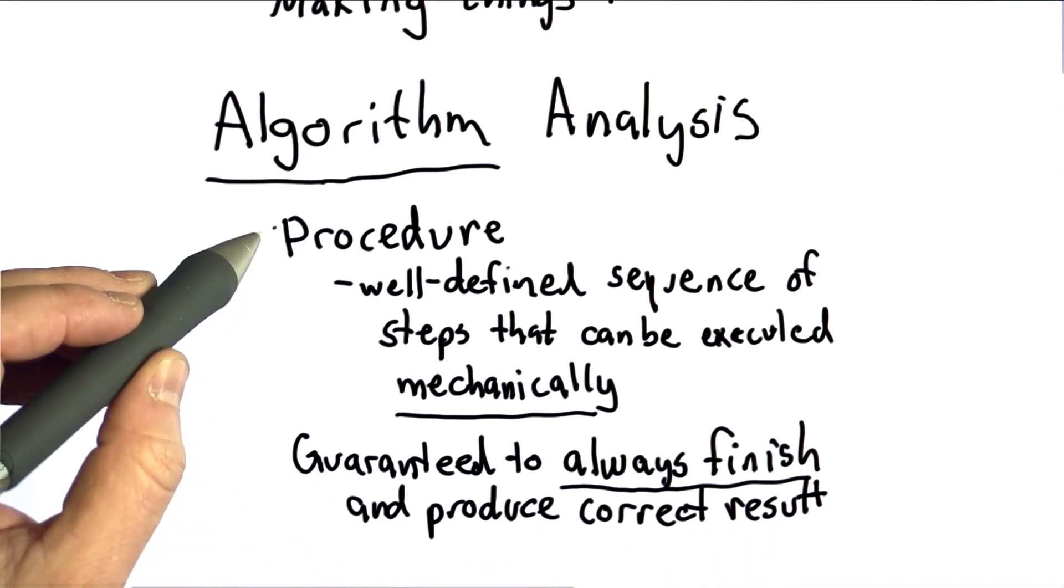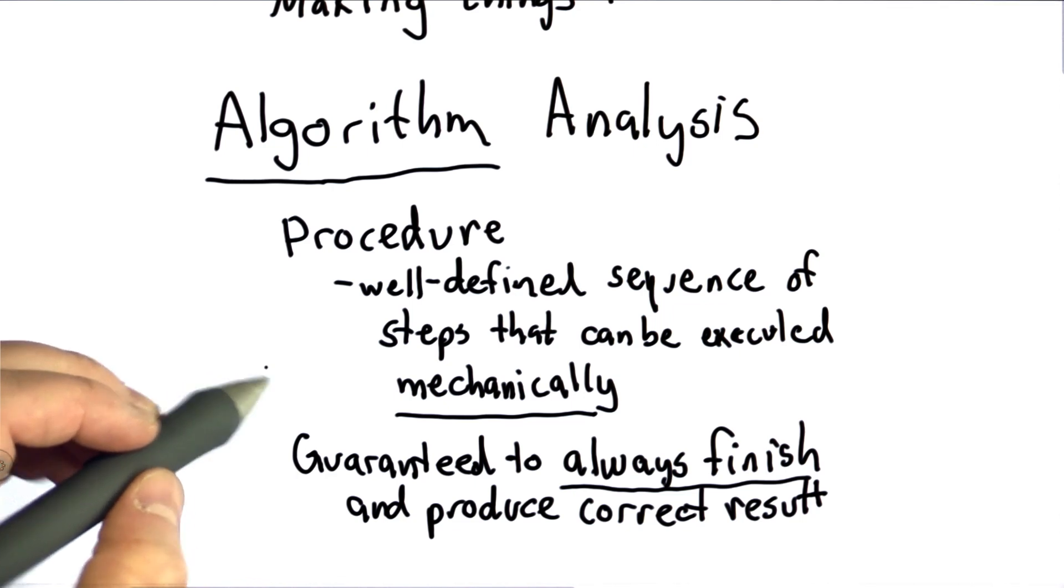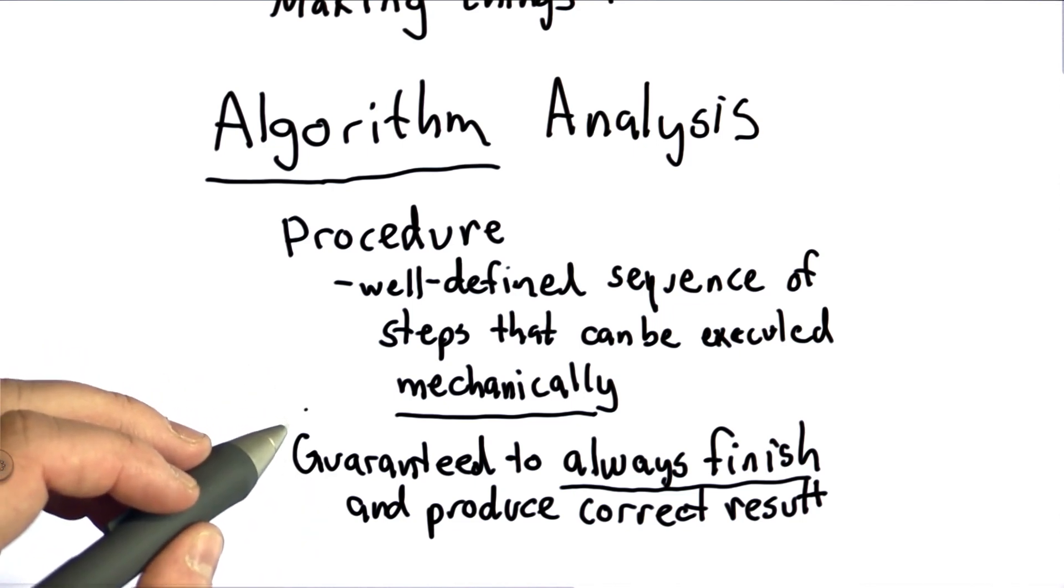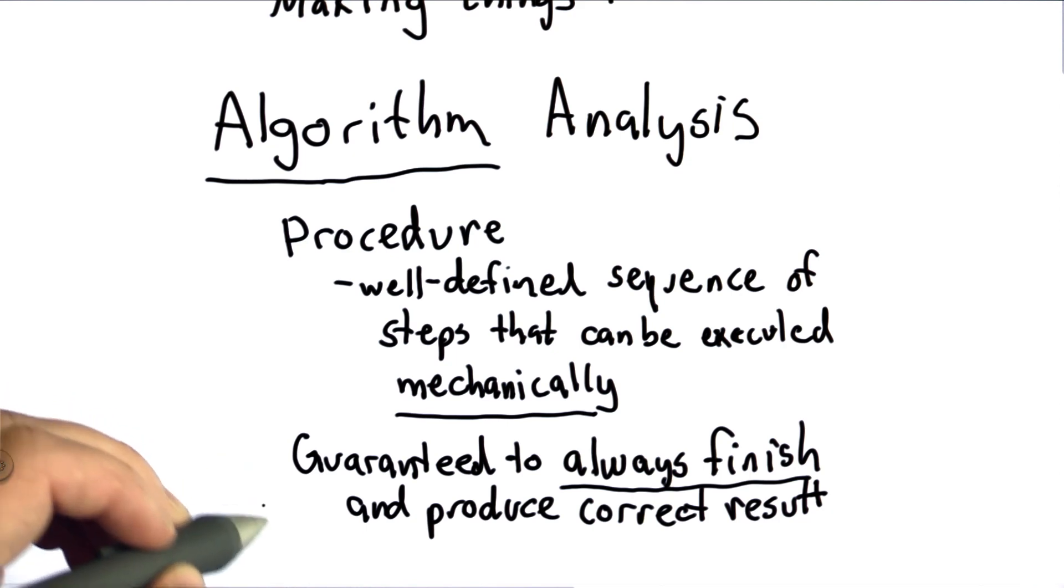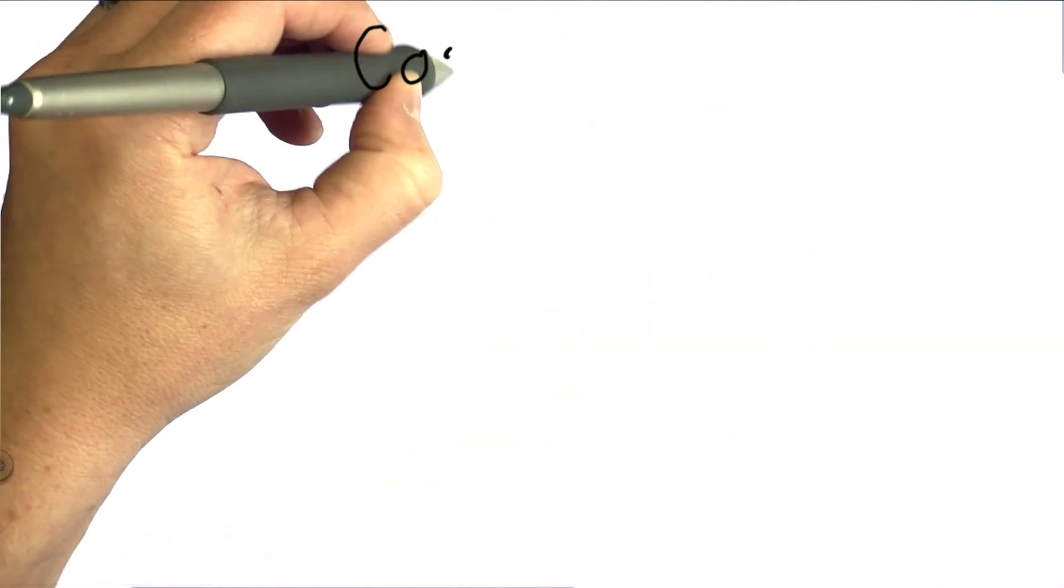So once we have an algorithm, we know we have a well-defined sequence of steps. So we can reason about what will happen on any input. And we know that it will always finish and always produce the correct result. So then we can think about what the cost is of executing that algorithm on some input.